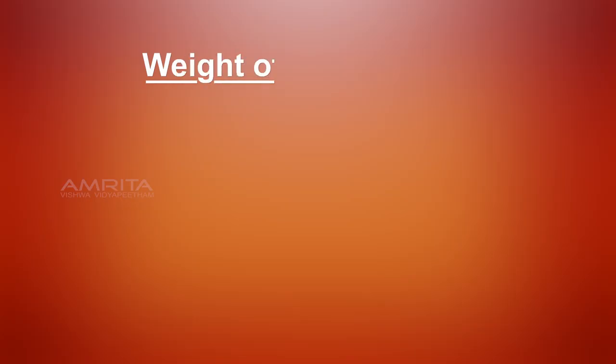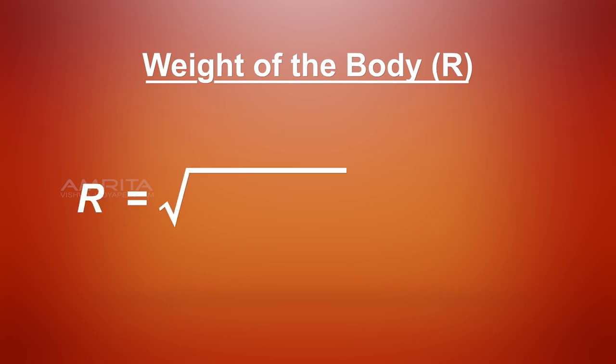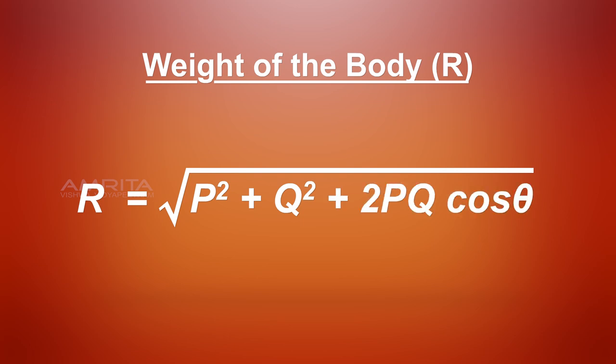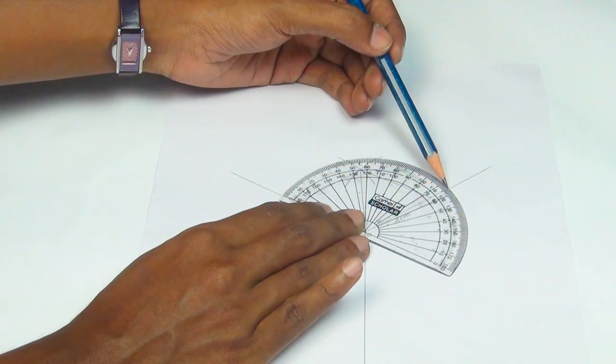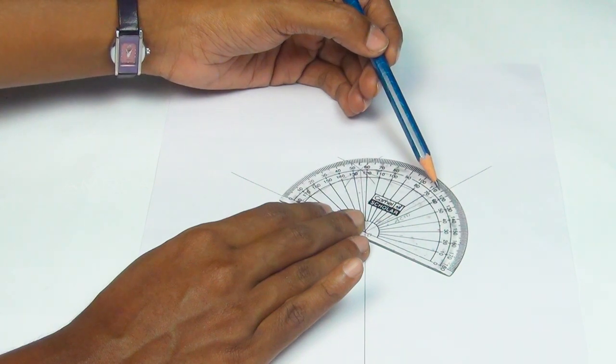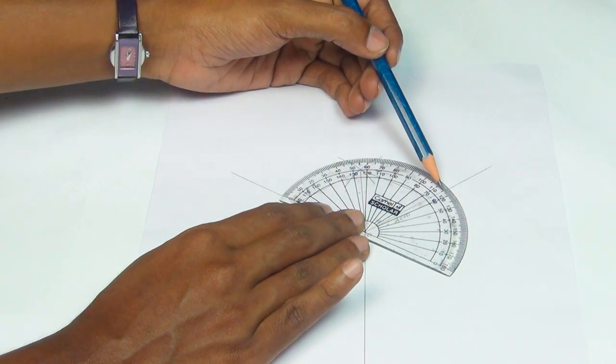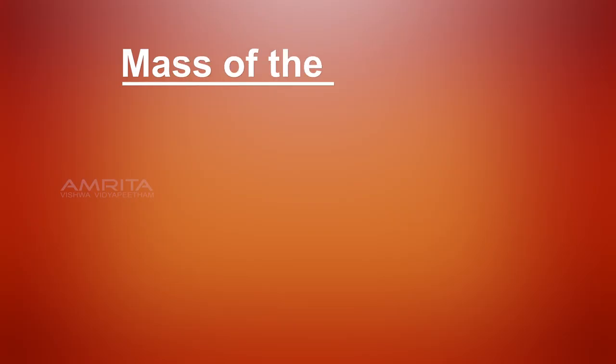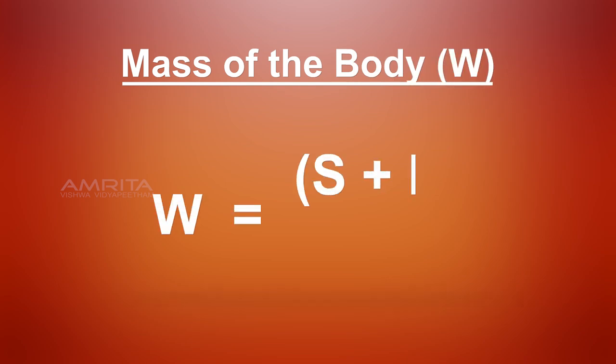Also calculate the weight of the body R using the equation R equals square root of P square plus Q square plus 2PQ cos theta, after measuring the angle AOB theta using a protractor. Mean of the two values of S and R will give the correct mass of the body W equals S plus R divided by 2.